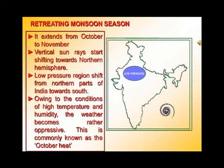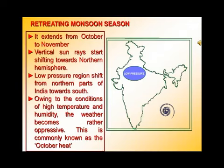The last season is the retreating monsoon season. As discussed earlier, the withdrawal of monsoon starts from the month of October and generally by November the monsoon has retreated from the whole of India, though sometimes it continues up to the first week of December. Low pressure areas that develop near the sea also shift during this period.